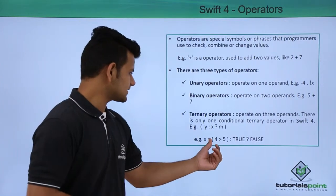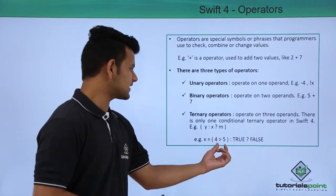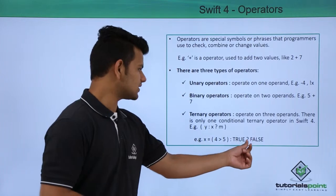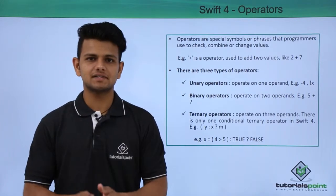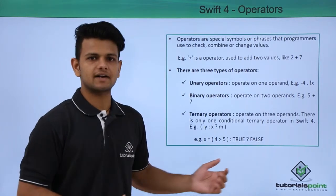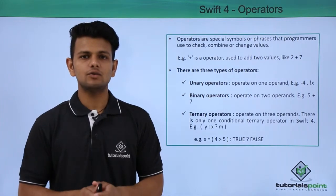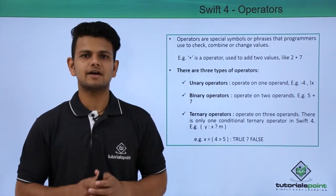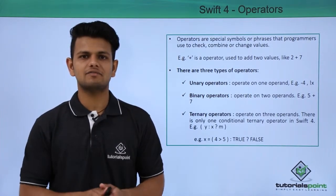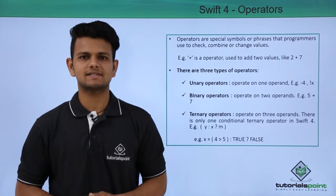We have written x equals to 4 is greater than 5, then true, otherwise false. What this means is, if 4 is greater than 5, then the value true will be assigned to x. Otherwise, if 4 is smaller than 5, then the value false will be assigned to x.